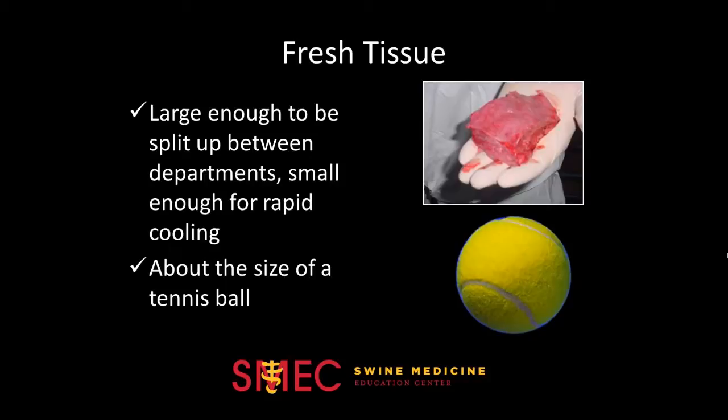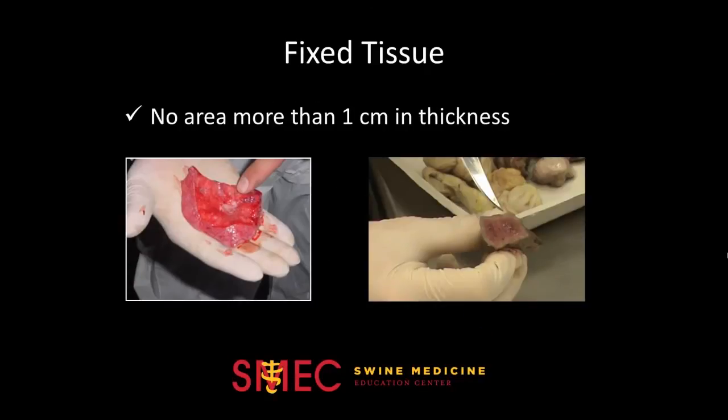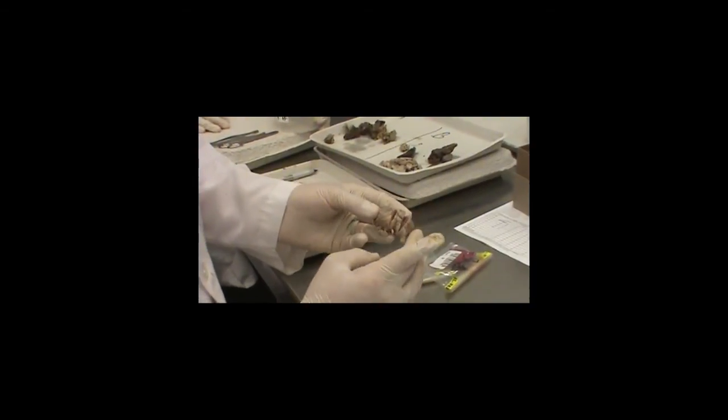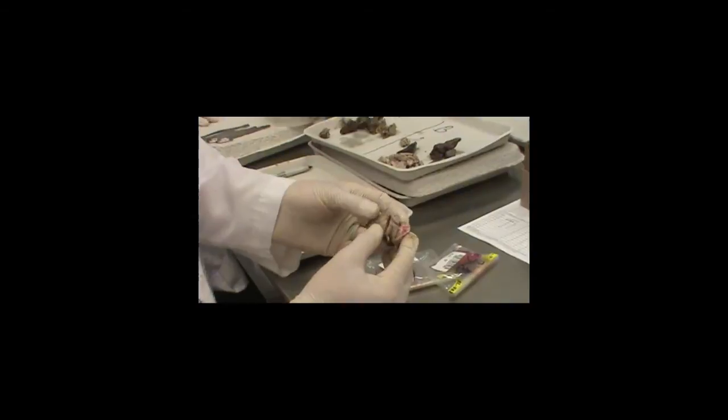The D-Lab will sometimes split up fresh tissue between departments, so sending in a sample around the size of a tennis ball is most desirable. For fixed samples, you want to make sure that no section is thicker than one centimeter to allow formalin to penetrate the entire organ. Not allowing formalin to penetrate the tissue will give a poorly fixed result. If you want to include a larger section of tissue, you may make slices in it to allow formalin to penetrate. You want to add formalin in a 10-to-1 ratio to the tissue.